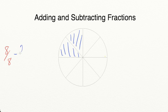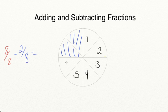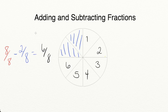We're going to subtract the two eighths of the pizza that I ate and find out how many pieces we have left. We have one eighth, two eighths, three eighths, four eighths, five eighths, six eighths of the pizza left. You'll notice that our denominator stayed the same because each of our pieces stayed the same size. Our numerator — we subtracted eight minus two to equal six. Just like adding fractions with a common denominator, when you're subtracting fractions with a common denominator, you're going to keep your denominator the same and subtract your numerators. So eight eighths minus two eighths equals six eighths.